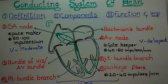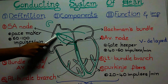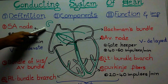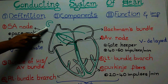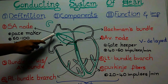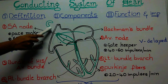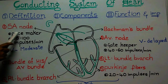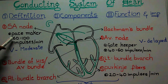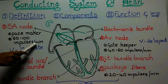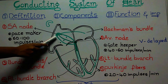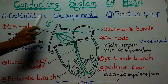Now coming to the components of the conducting system, their functions and importance. The first and main component is the SA node, also called the sinoatrial node. It is horseshoe-shaped — I have drawn separately how a horseshoe shape looks for better understanding. This SA node is present in the wall of the right atrium, just below the superior vena caval opening. It is called the pacemaker and is capable of producing 60 to 100 impulses per minute. The impulses which start here travel to the two atria and help them contract.